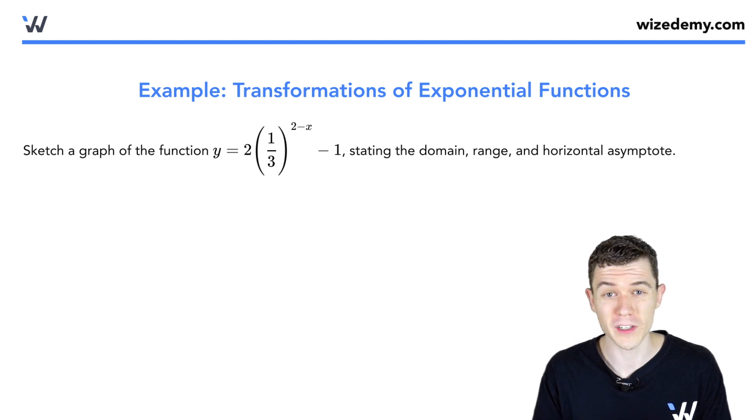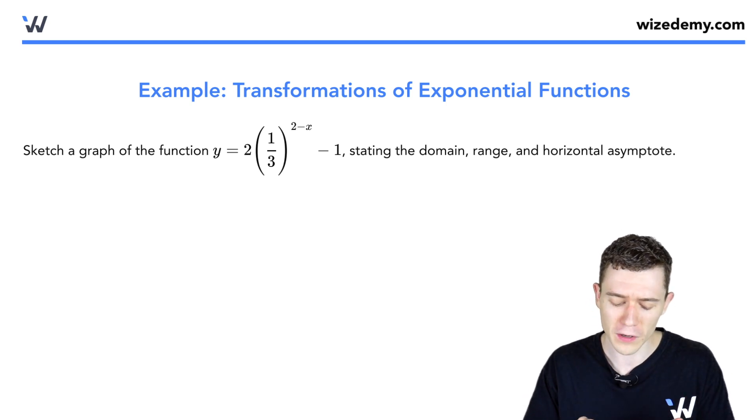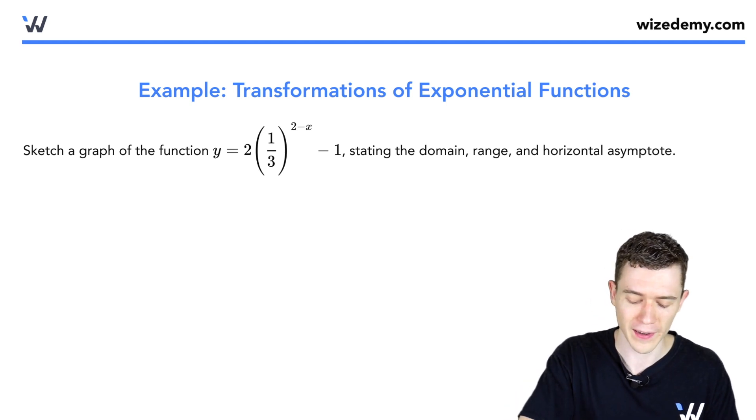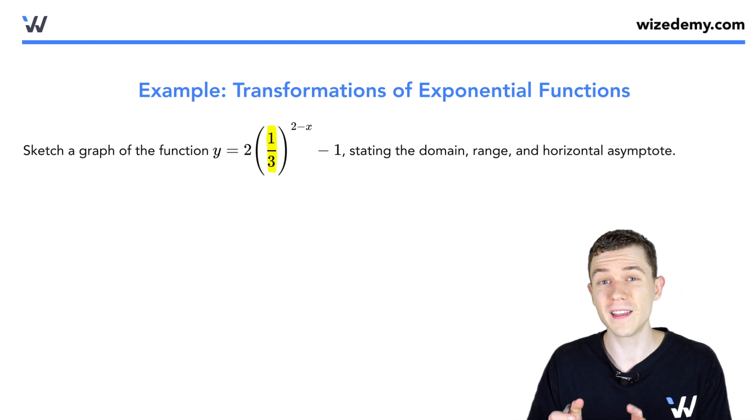Here we have a transformed exponential function. We'd like to graph it, find its domain, range, and asymptote. Now it's one-third to a power here, and typically we like the base not to be a fraction, so the first thing we should really do here is use our properties of exponents to rewrite one-third.